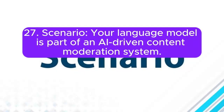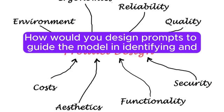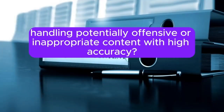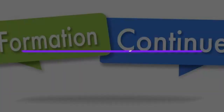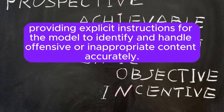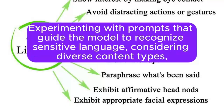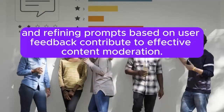Scenario 27: Your language model is part of an AI-driven content moderation system. How would you design prompts to guide the model in identifying and handling potentially offensive or inappropriate content with high accuracy? Answer: Crafting prompts for a content moderation system involves providing explicit instructions for the model to identify and handle offensive or inappropriate content accurately. Experimenting with prompts that guide the model to recognize sensitive language, considering diverse content types, and refining prompts based on user feedback contributes to effective content moderation.